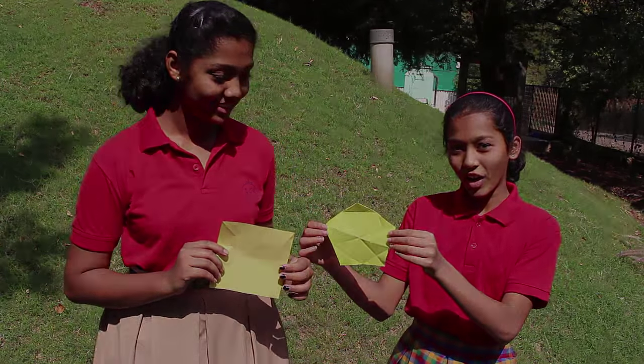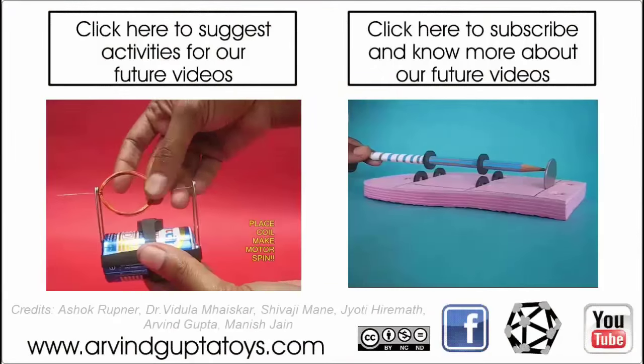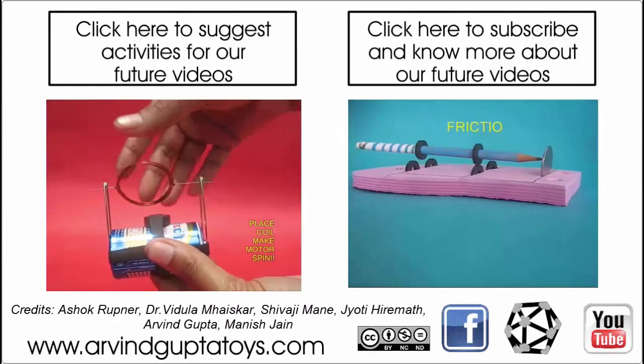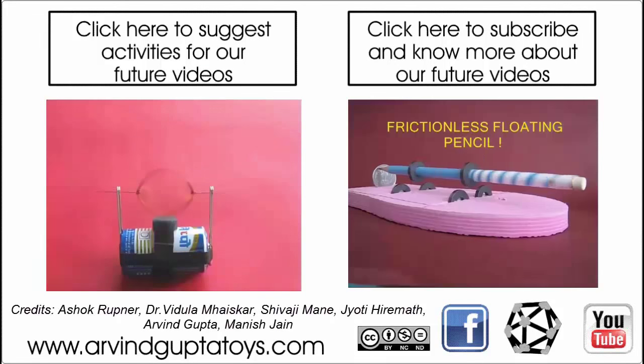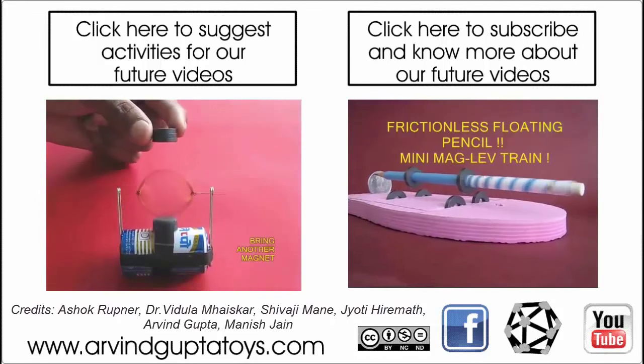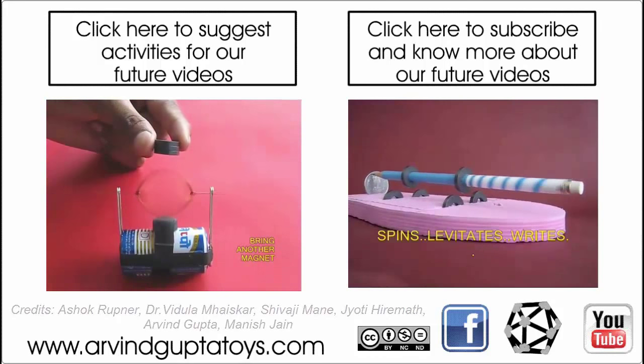In the next video, we shall see why removing half the side of a square from the half rectangle resulted in the side of a regular pentagon. So keep watching and thank you.